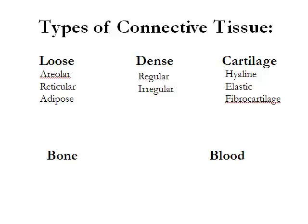There are many different functions that we're going to see as we look at different connective tissues. There are major classes of connective tissue: we have loose connective tissue, which includes irregular, reticular, and adipose tissue; dense connective tissue; cartilage; bone; and blood. We're going to look at most of these in depth. Bone and blood we will scratch the surface on because we have separate units dedicated to bone and the cardiovascular system.